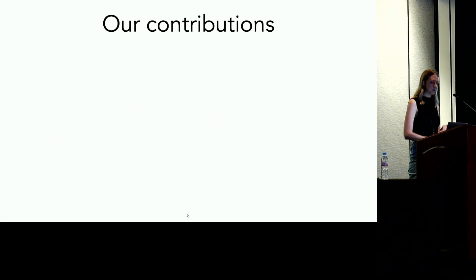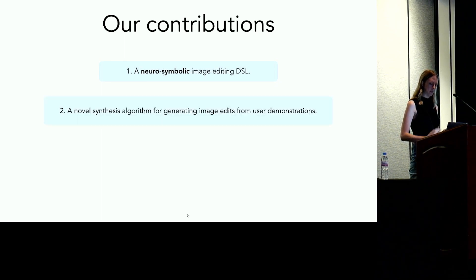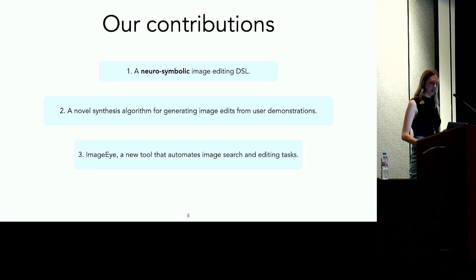This work has a few key contributions. The first is a neuro-symbolic programming language that describes an assortment of image editing tasks using a neural object detector. The second is a novel algorithm that synthesizes programs in this DSL based on a user demonstration. And the third is our implementation of this approach, which we call ImageEye.